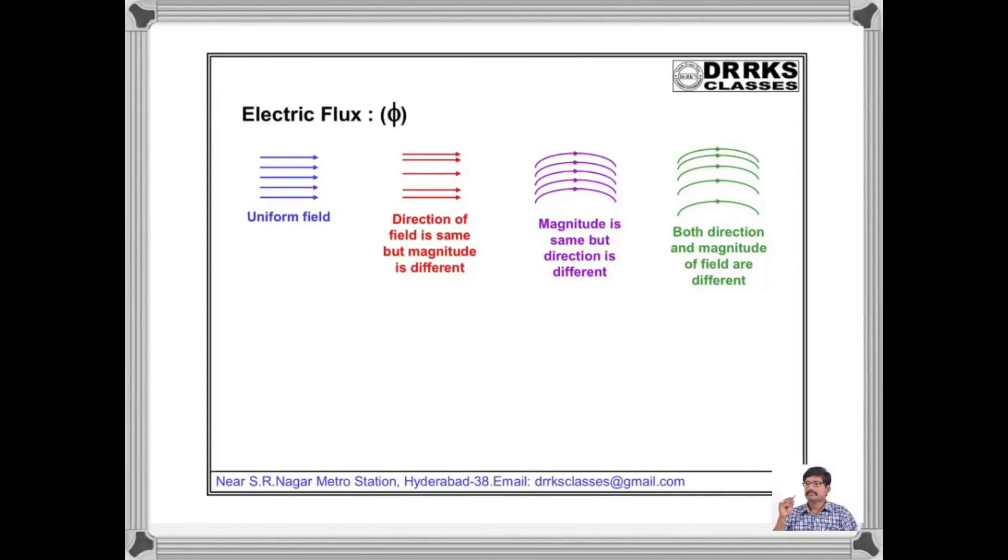From the nature of electric lines of force we can predict the nature of electric field. In the first case the field is uniform. In the second case the direction of field is same but magnitude is different at different places. In the third case the direction is given by tangent to the line of force. In fourth case both direction and magnitude of field are different.